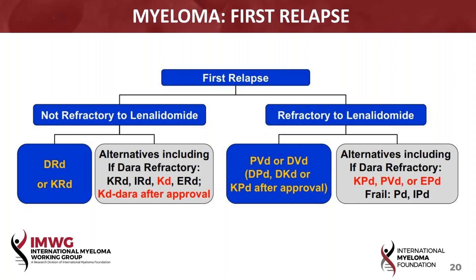I rarely use a doublet in the relapse setting. I like to use triplets — a monoclonal antibody with either pomalidomide or lenalidomide and pick the right proteasome inhibitor for that combination. I find that pomalidomide is a very good immunomodulatory drug. It's easier to use; you can manage the side effects quickly. So I like to use it in combination.